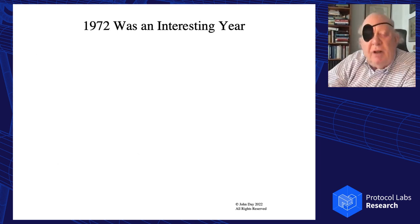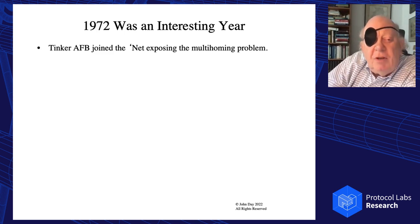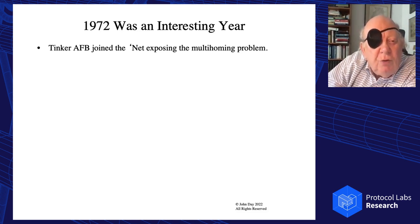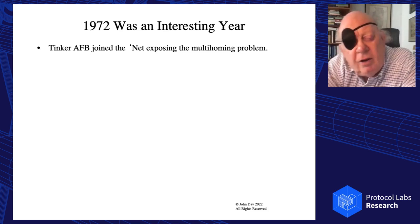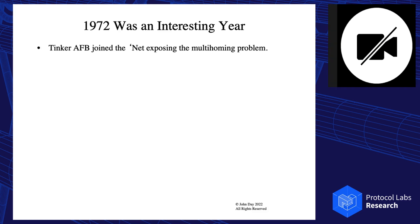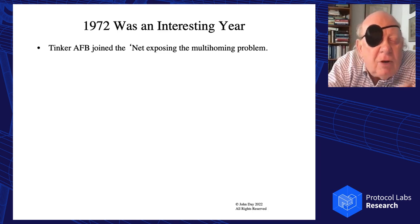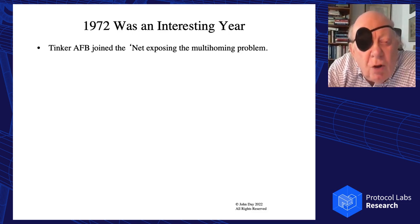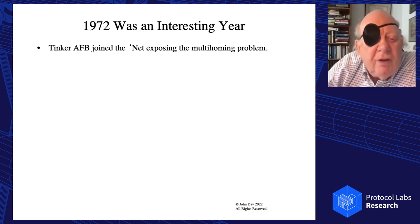1972 was an interesting year. Tinker Air Force Base joined the net, exposing the multi-homing problem. In the ARPANET, your host address was your IMP port number — your interface to the IMP. When Tinker wanted two connections to the network, that looked to the network like two different hosts. The fix was obvious: we need to route to the node, not to the interface — a problem we'd already seen in operating systems. It turns out that wasn't so obvious to everyone.